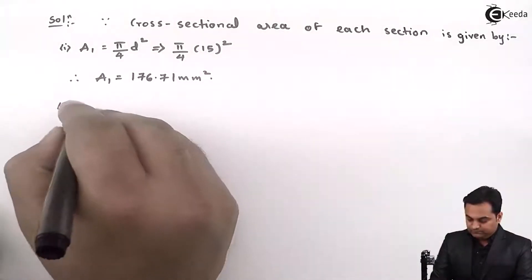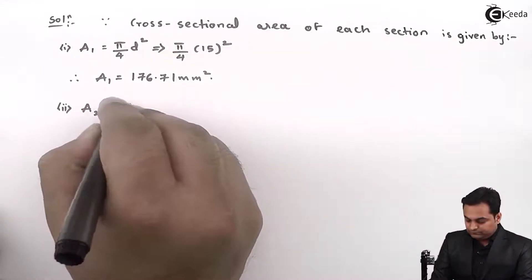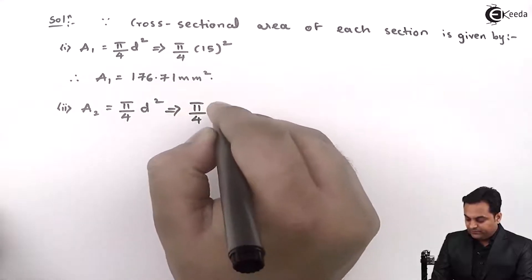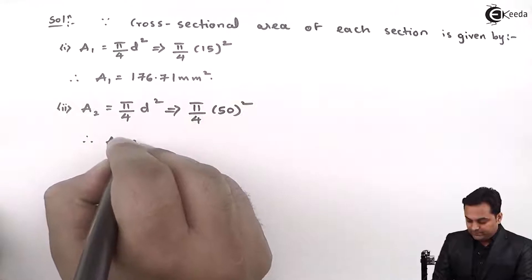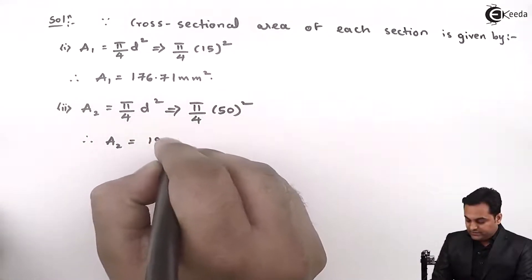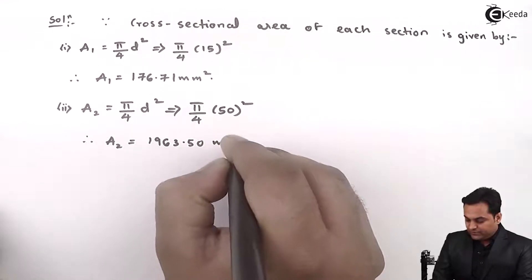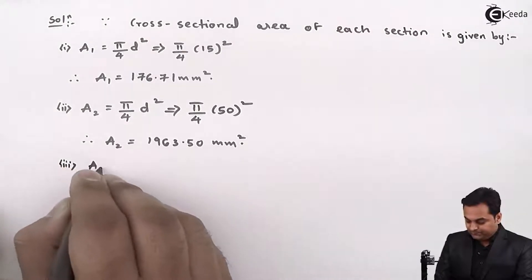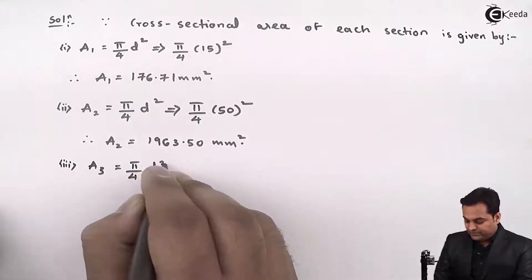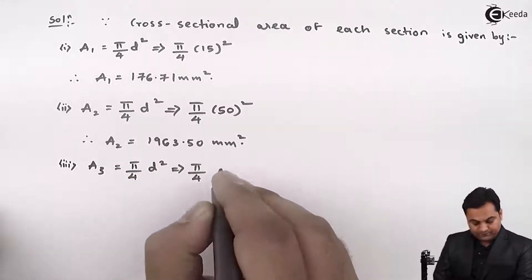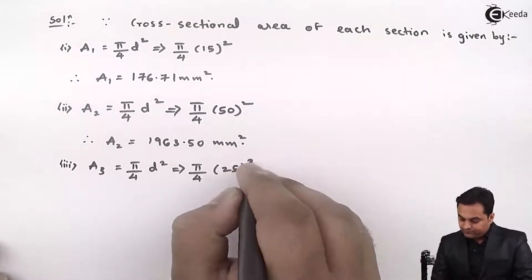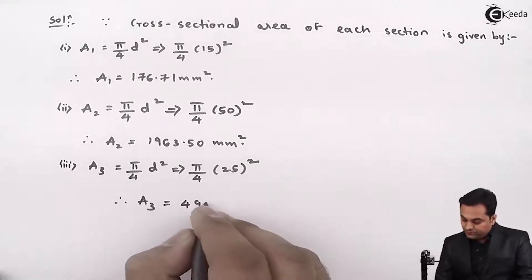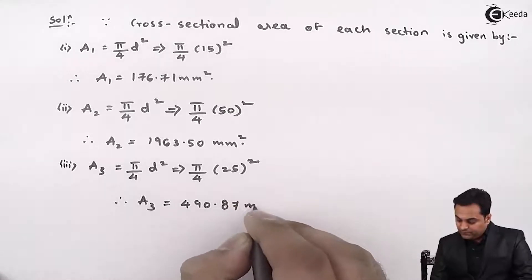Area of Section 2: A2 = (π/4) × d2² = (π/4) × 50² = 1963.50 mm². Area of Section 3: A3 = (π/4) × d3² = (π/4) × 25² = 490.87 mm².